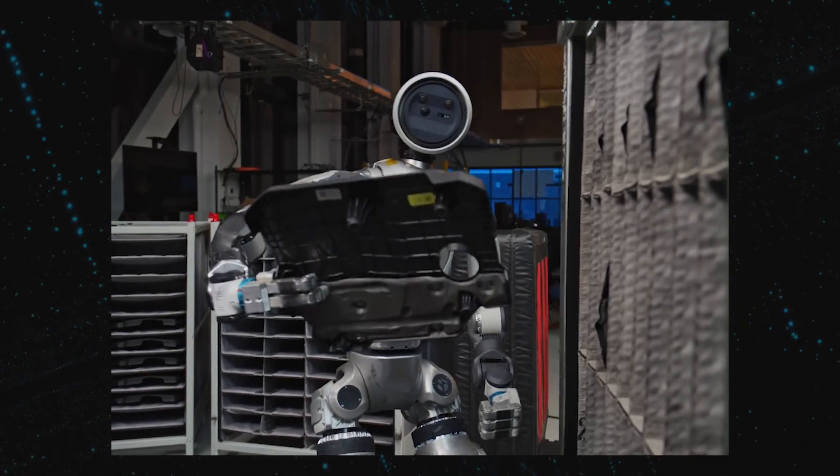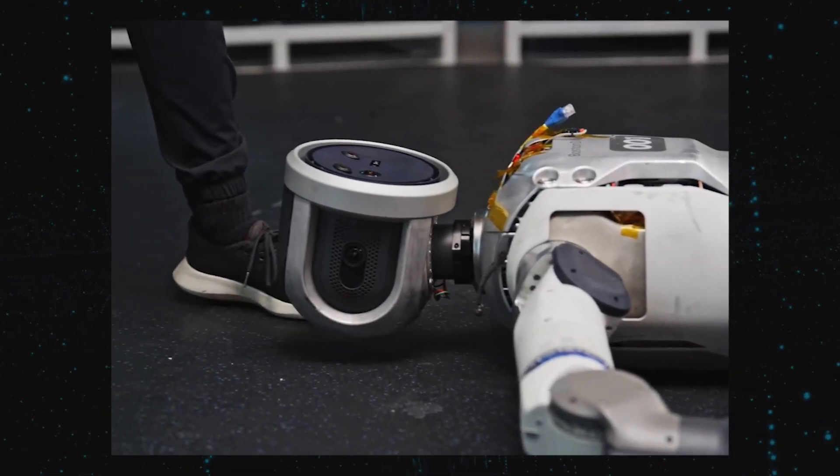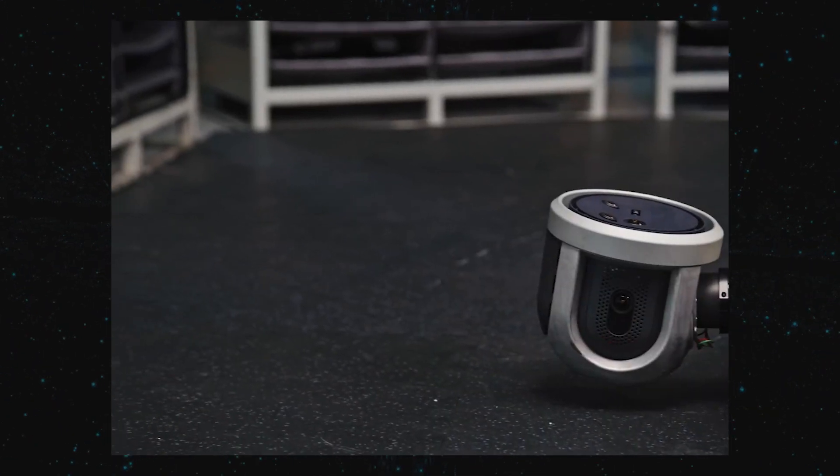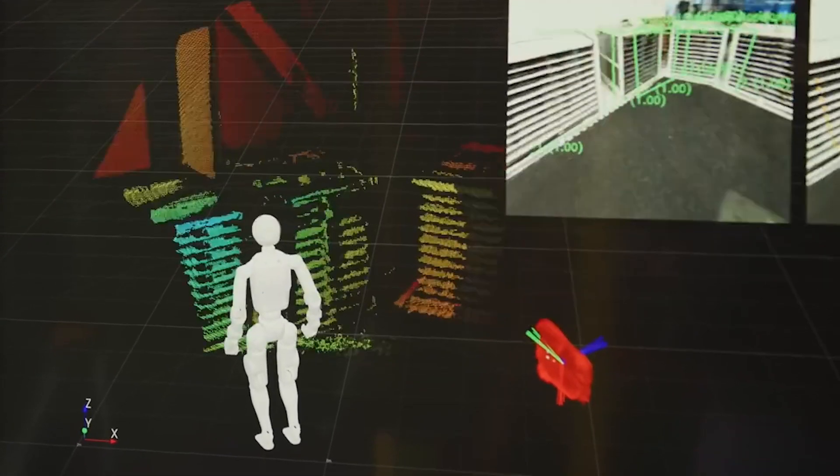Two stereo proximity cameras enhance situational awareness, while a third, angled slightly downward, improves object detection. This stereo vision system allows Atlas to create composite images of its surroundings, ensuring precise navigation and interaction with objects.